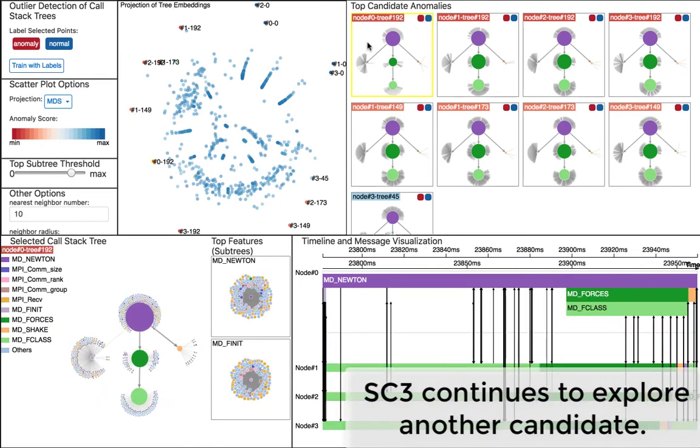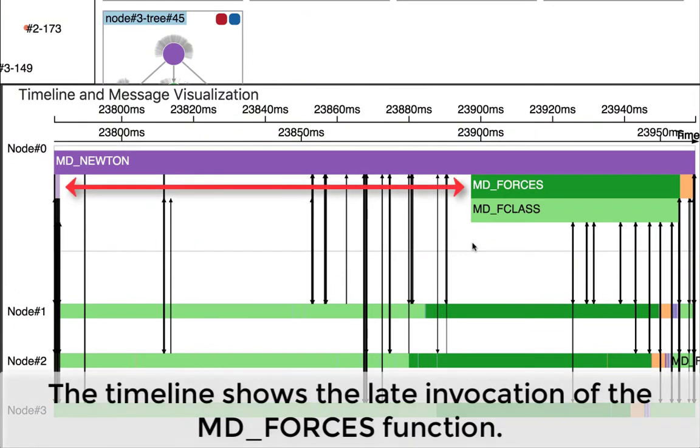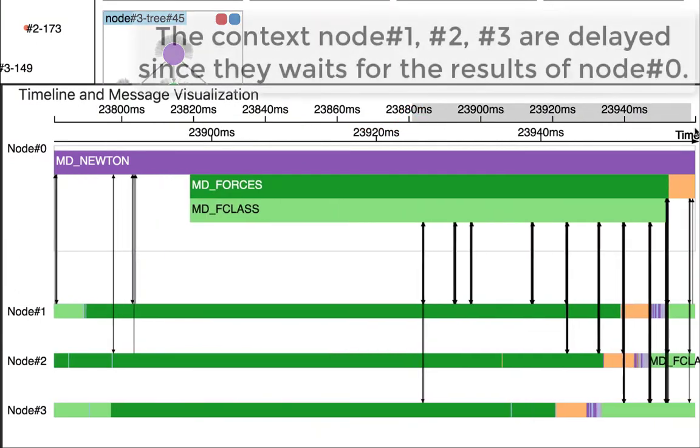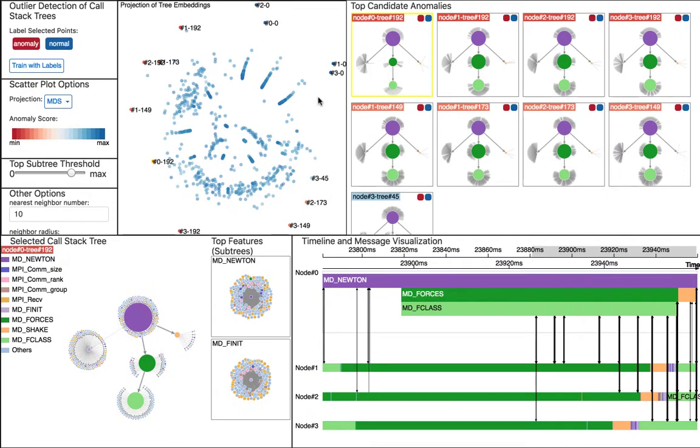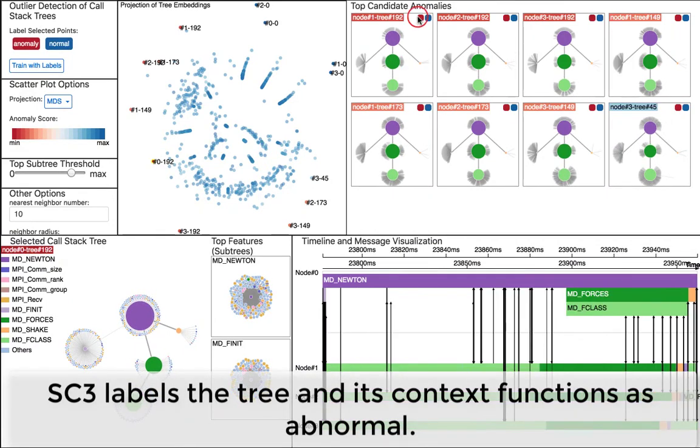He continues to explore another tree. He finds that MDForces is called after waiting a long time in the selected tree. This also causes the delay of the other nodes, since the context nodes are waiting for the results of the selected tree. SC3 labels them as abnormal and updates the model.